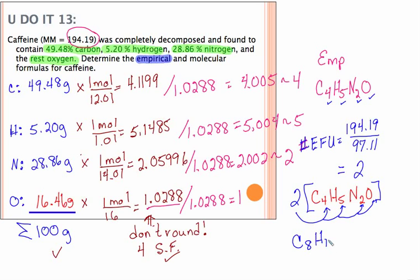And that will give us C8H10N4O2 for our molecular formula for caffeine.